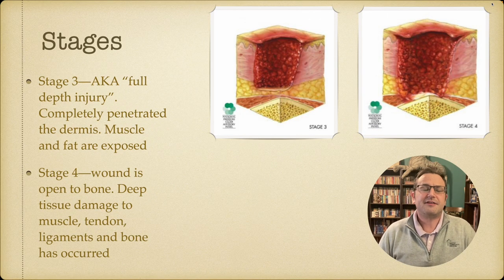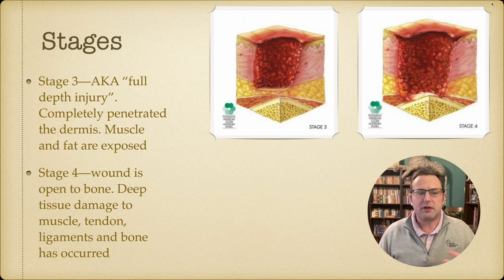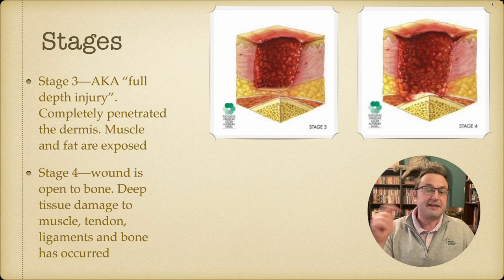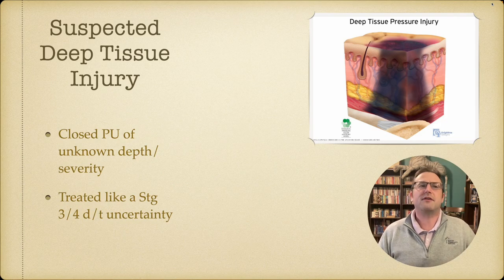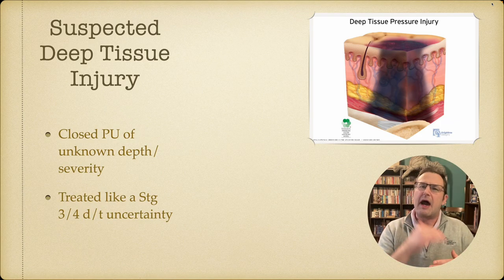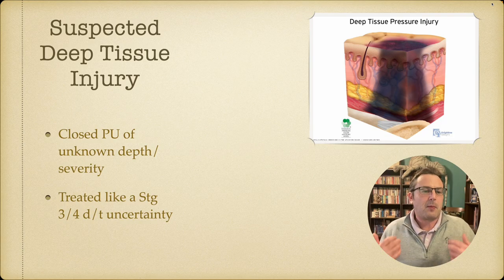Stage three and stage four are called full-depth injuries. Stage three is when the wound has completely penetrated the dermis — muscle and fat are exposed. Stage four is a wound open to the bone, with possible deep tissue, ligament, tendon, or bone damage. A wound nurse once said: if you probe it and it goes 'tink tink tink,' it's a stage four — that's always stuck with me. There's also suspected deep tissue injury — a pressure injury where the skin hasn't actually opened, but we know it goes deeper than a stage one. We treat it like a deep tissue injury even though we can't confirm the depth.